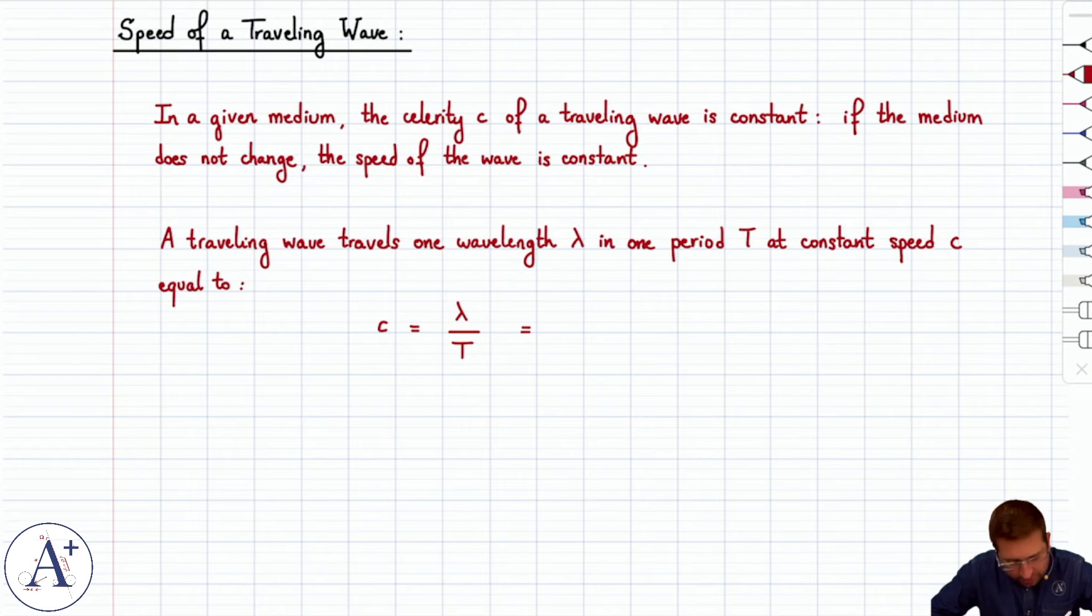Meaning that the celerity of a traveling wave is lambda over T. For any traveling wave, it doesn't matter if it's a mechanical wave, EM wave, anything. As long as it's a wave, c is lambda over T.